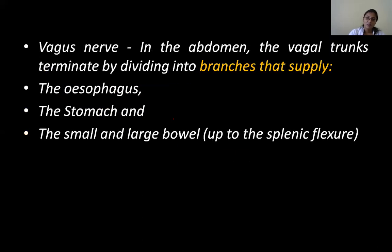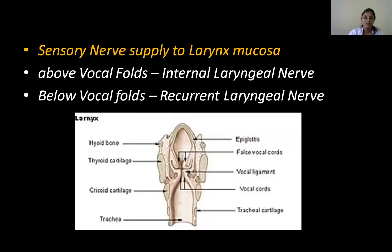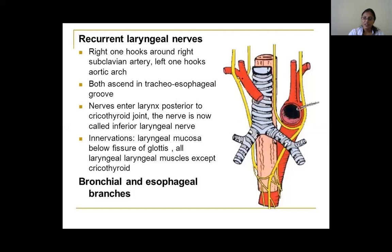The vagus supplies all muscles of the pharynx except stylopharyngeus, and all muscles of the soft palate via the pharyngeal plexus except tensor veli palatini. Developmentally, the recurrent laryngeal nerve hooks around structures related to the aortic arches. There are six aortic arches: on the right, the sixth arch disappears and the fourth arch becomes the subclavian artery, so the recurrent laryngeal hooks the subclavian. On the left, the fourth arch becomes the arch of aorta and the sixth dorsal part becomes the ductus arteriosus or ligamentum arteriosum.